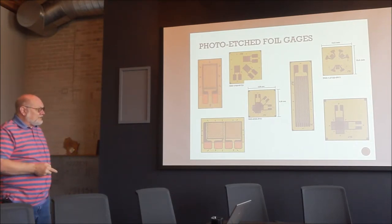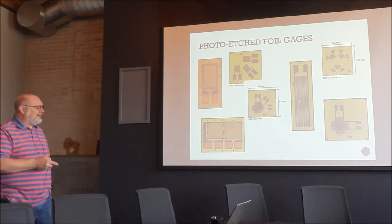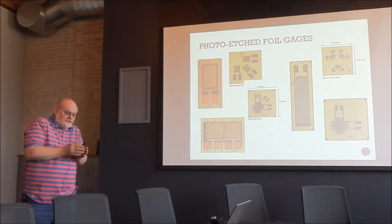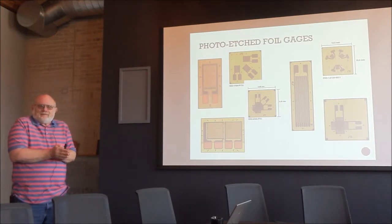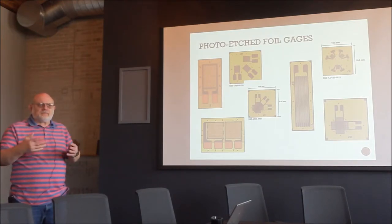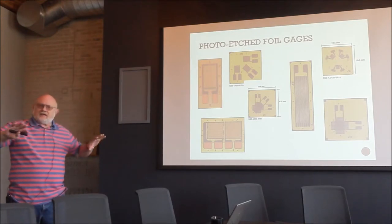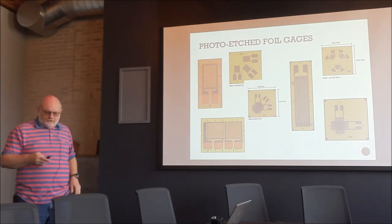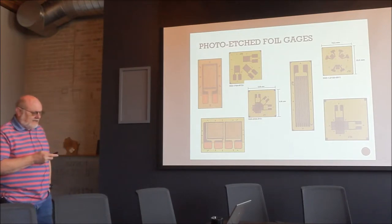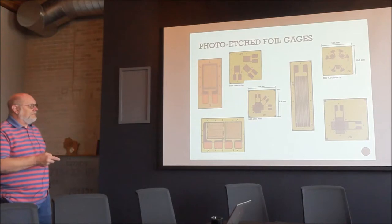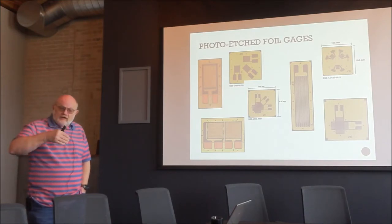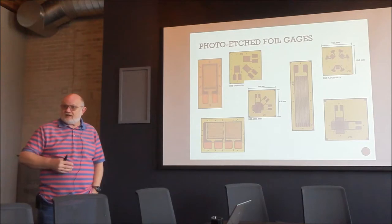Long gauges now go up to six inches — previously four — and are used on heterogeneous materials like concrete, where a small gauge sitting on a piece of aggregate gives misleading results. These long gauges span the heterogeneous artifacts to give uniform representative results; they've been used extensively on concrete railroad ties. A special rosette with a free-legged apparatus allows an end mill to drill through the center of the array to relieve and measure localized residual stress.